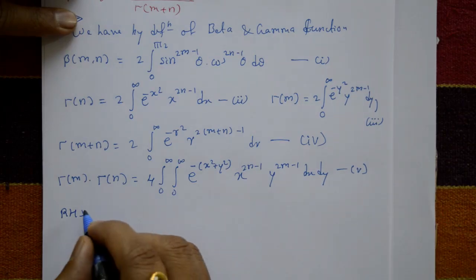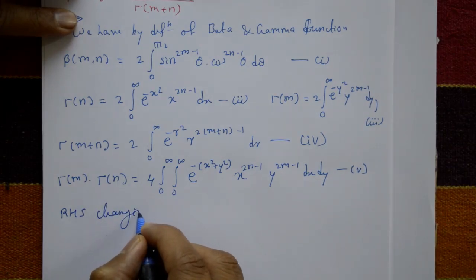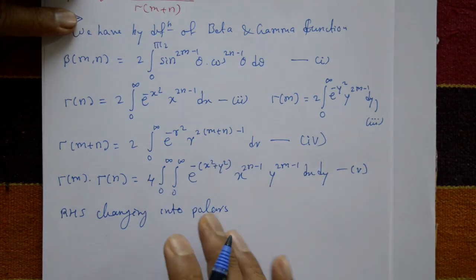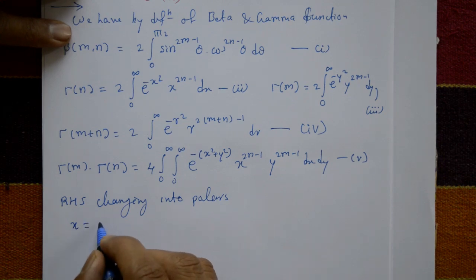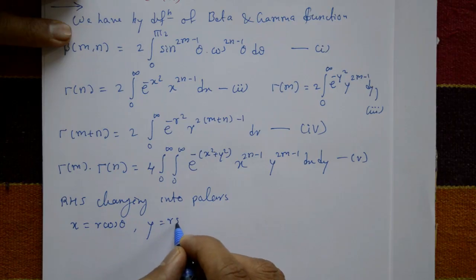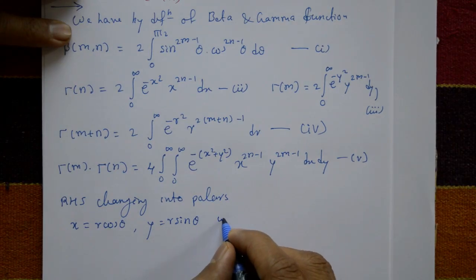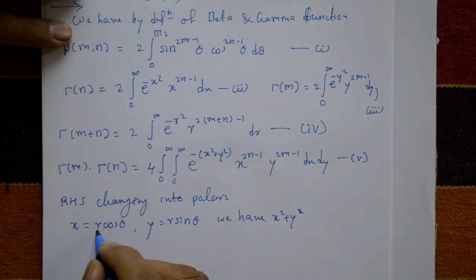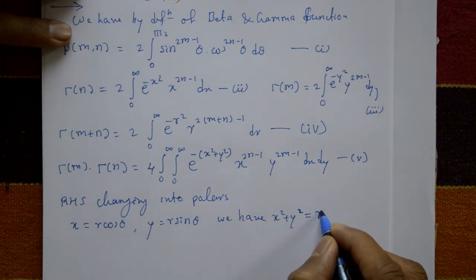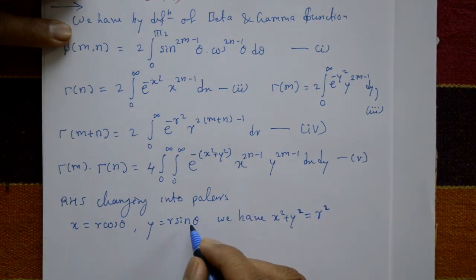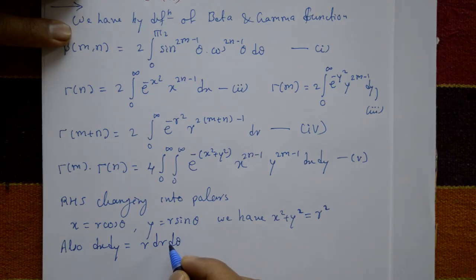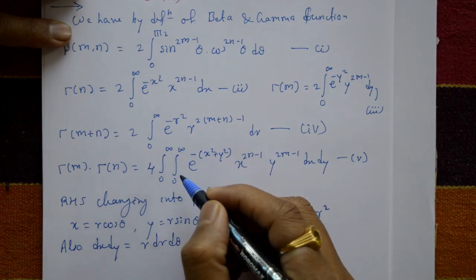Changing the right-hand side into polar form: put x equals r cosθ and y equals r sinθ. Squaring and adding these two, x² + y² equals r² cos²θ + r² sin²θ, and r² is common, giving cos²θ + sin²θ equals 1, so x² + y² equals r². Also, dx dy becomes r dr dθ.